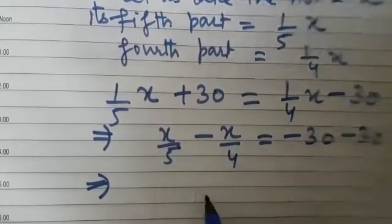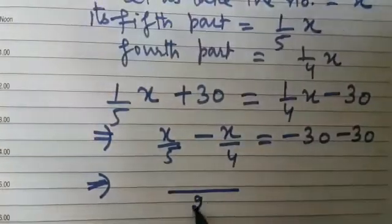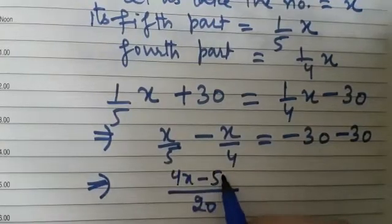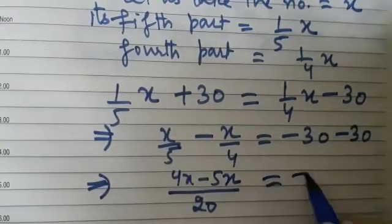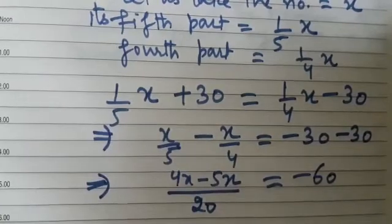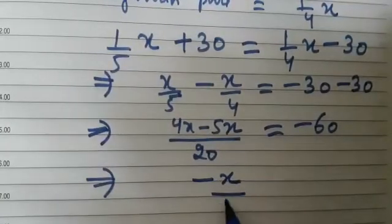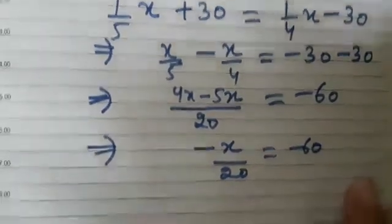So let us simplify this. We get 20 as LCM. So 4x minus 5x equals minus 60. This implies, now simplify this, minus x upon 20 is equal to minus 60.